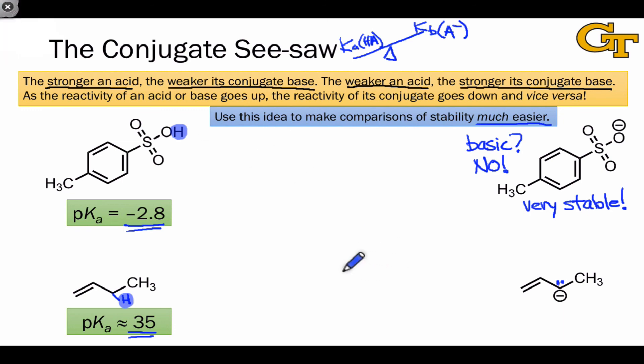This allows us to conclude, without doing any calculations at all, that this anion is much more basic than the anion above, and that this molecule is less stable than the anion above. All of this is due to the conjugate seesaw, and it shows the utility of comparing pKa values to make comparisons not just of acidity, but of the basicity of the associated conjugate basis.